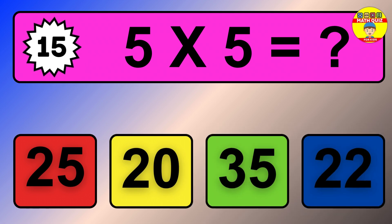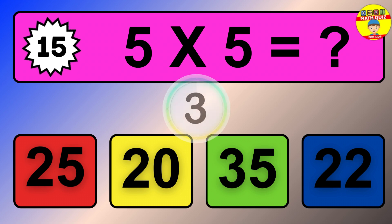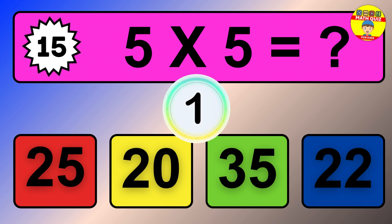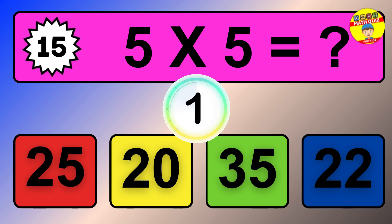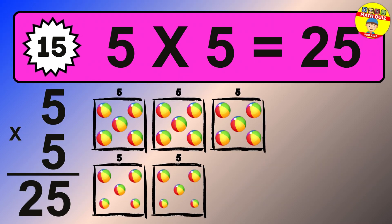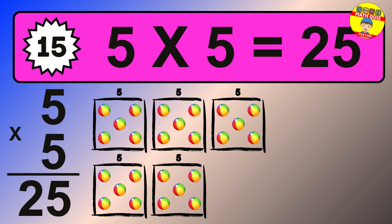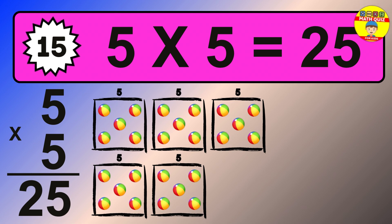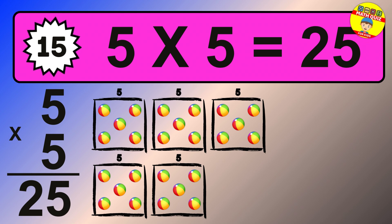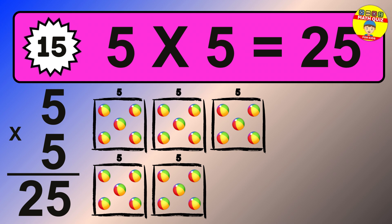Question 15. 5 times 5 equals what? The answer is 5 times 5 is 25. To calculate, we have 5 groups with 5 balls each one. So how many balls do we have? 25 balls.